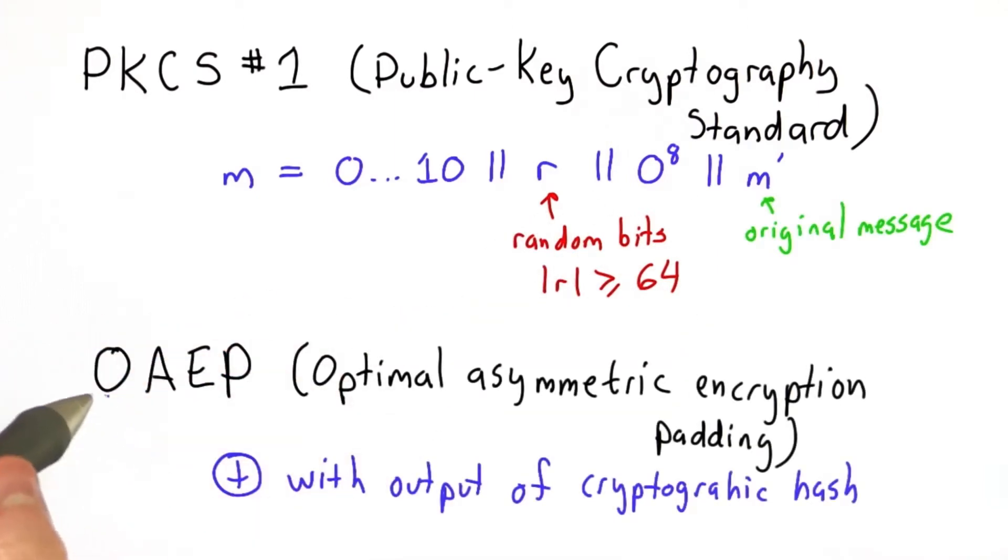There's a better way to do this, which is known as optimal asymmetric encryption padding, OAEP. I won't go into the details of that, but the main idea is to XOR the message with the output of a cryptographic hash function that takes in a random value. But the recipient can still decrypt the message because they can obtain the random value and XOR out the result of the cryptographic hash.